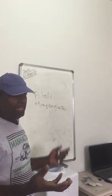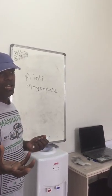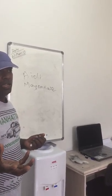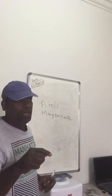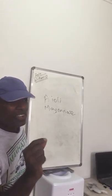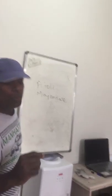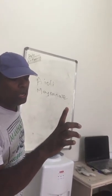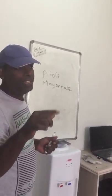Mayonnaise is usually made with oil and egg yolk. We are making main sauce. The ratio will be for 1 liter of oil, 8 egg yolks. That means 125 grams of oil for 1 egg yolk. For 1 liter, 8 egg yolks.